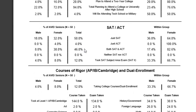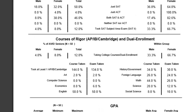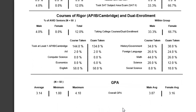You can also see some testing information — how many students took the SAT, ACT, both tests, neither test, and the subject area exams. You can also see AP, IB, and dual enrollment courses. And at the end, you can see GPA information about the graduating seniors: the average GPA, the minimum, the maximum, and then broken down by male and female.